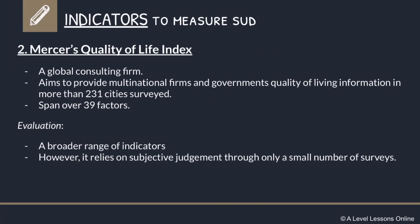The next indicator is Mercer's Quality of Life Index, by a global consulting firm called Mercer. They aim to provide multinational firms and governments quality of living information for more than 231 cities — already more cities than the Economist Group index. Over 39 different factors, they explain how livable each city is. These factors include things like urban legibility, accessibility of public transport, and income disparity.